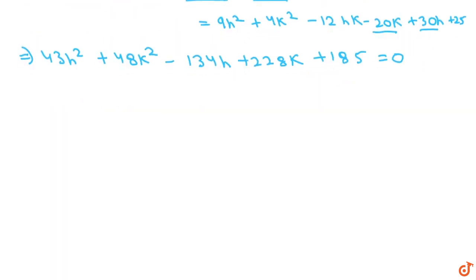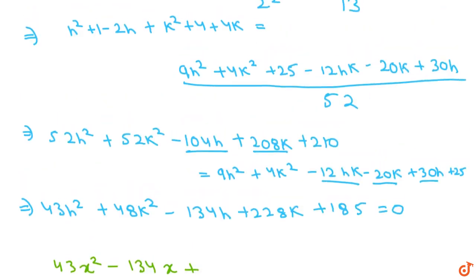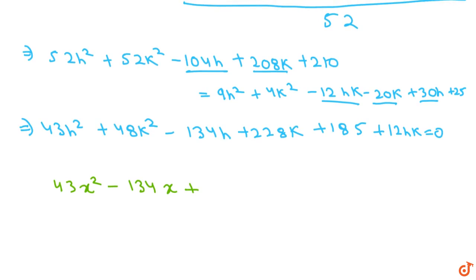Now because we have h and k as arbitrary points on the ellipse that will satisfy all points, we can replace them with x and y. So our final answer will be 43x² plus 48y² plus 12xy minus 134x plus 228y plus 185 equals 0, and this is our final answer for the equation of the given ellipse.